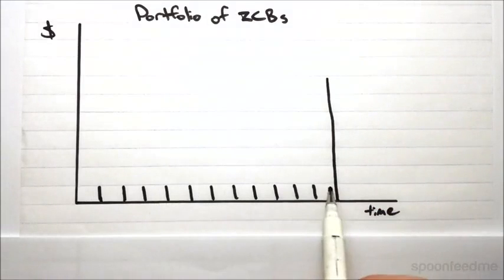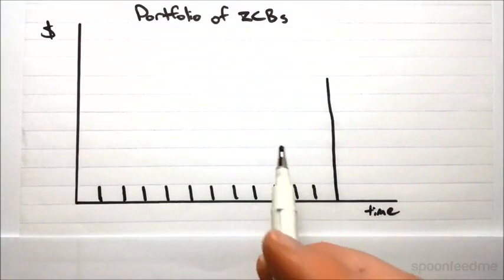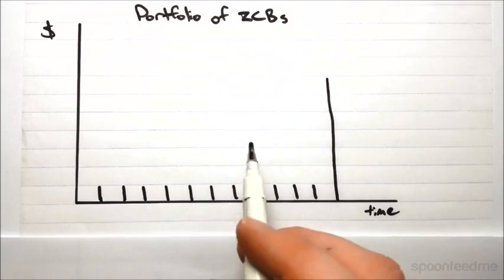So what does this look like? This is the kind of cash flows you would get from a coupon bond.